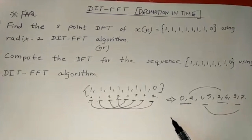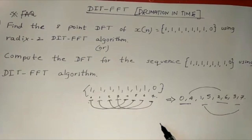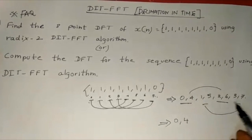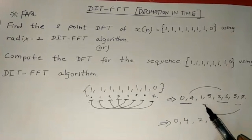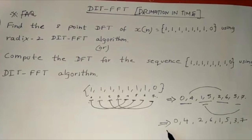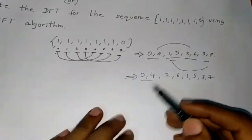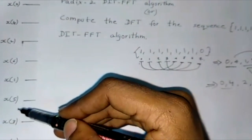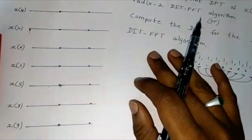Now take the even pairs first and write them separately. The first even pair is 0 and 4, and the next even pair is 2 and 6. Then take the odd pairs: 1 and 5, and the remaining odd pair 3 and 7. So we get the order: 0, 4, 2, 6, 1, 5, 3, and 7.